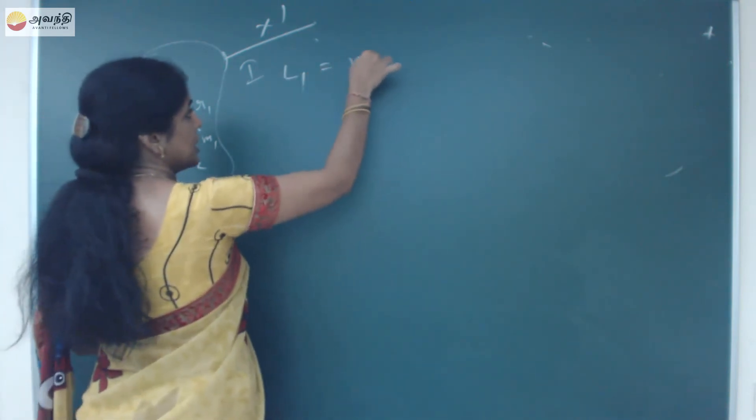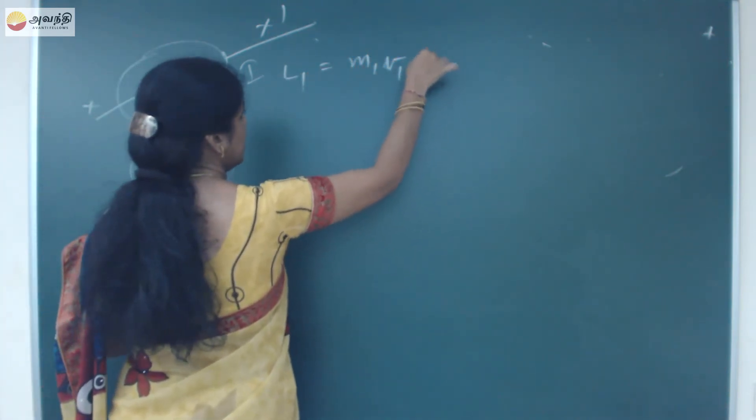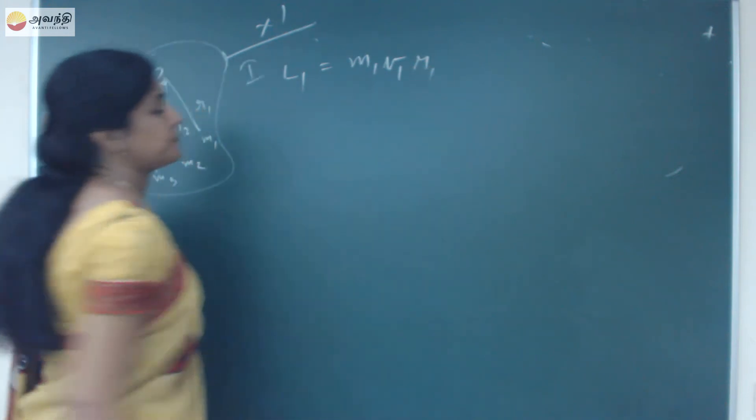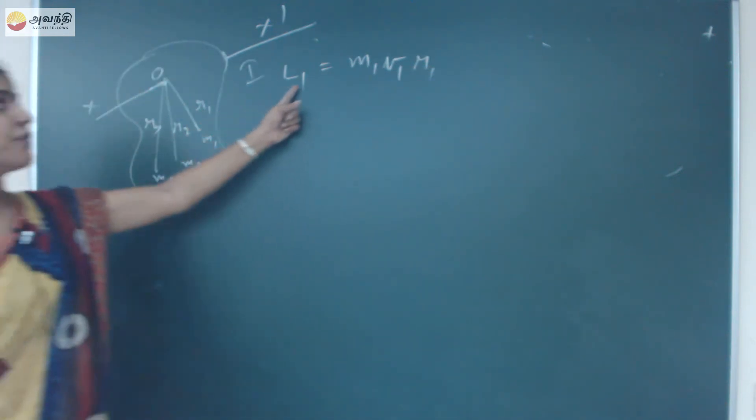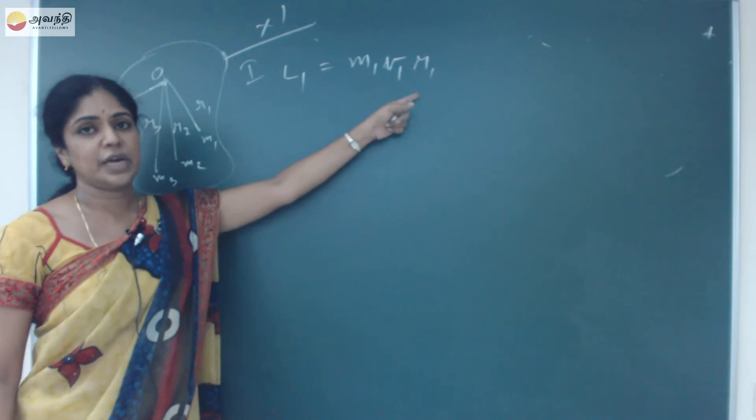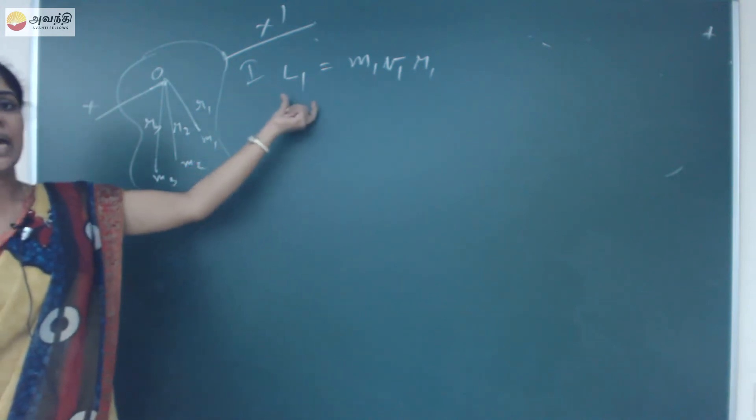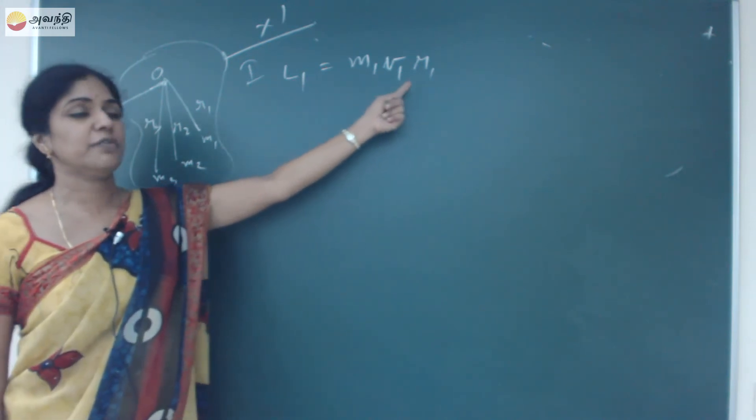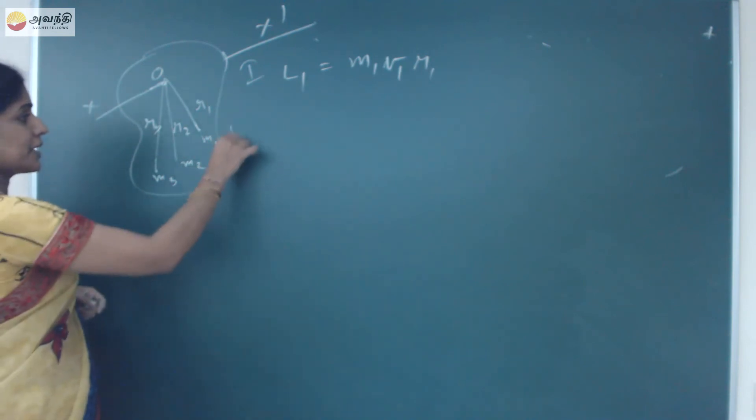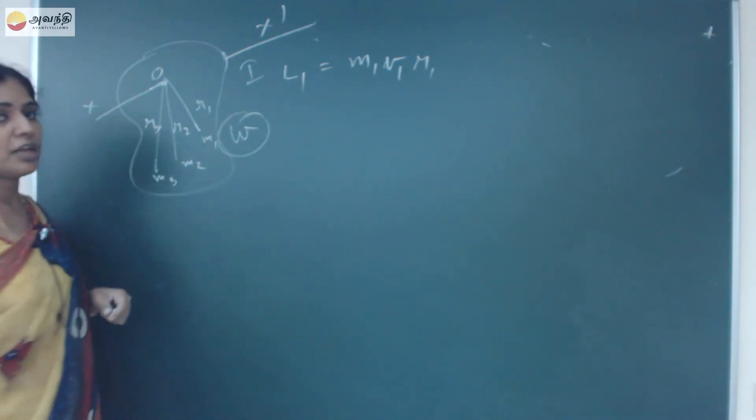It is given by L1 equals M1, V1, R1. In the angular momentum formula is M, V, R. So first particle angular momentum I am taking it as M1, V1, R1. Now, the object is making a rotational motion with angular velocity omega.